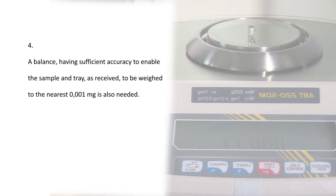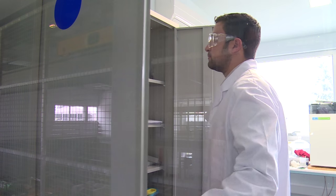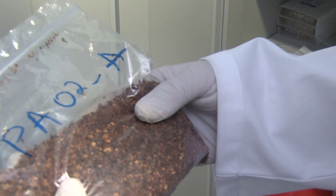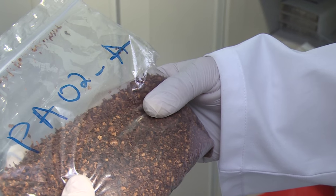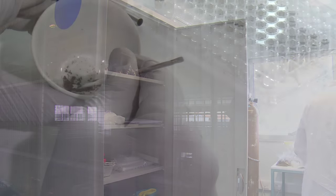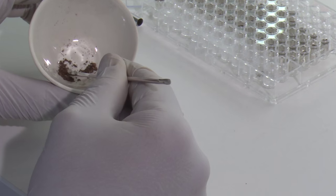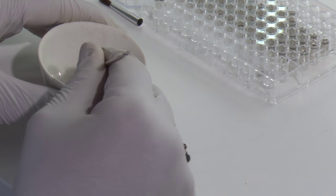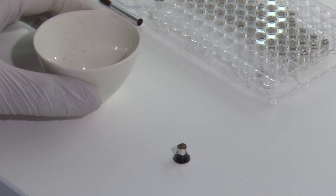A balance having sufficient accuracy to enable the sample and tray as received to be weighed to the nearest 0.001 milligram is also needed. Samples for the determination of total moisture content shall be sampled in accordance with WI-14780 and shall be received in the laboratory in sealed airtight containers or bags. The test sample is a general analysis sample with a nominal topside of 1 mm or less prepared in accordance with WI-14780.